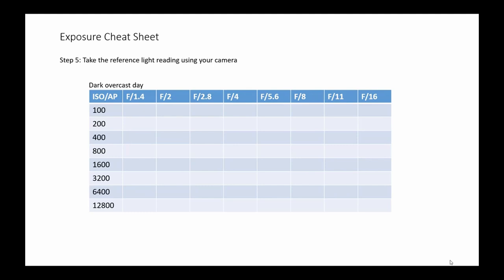Next, you take a reference light meter reading using your camera. Let's say you get a reading of ISO 400 at 1/125th of a second at f8. Now you need to mark down the shutter speed in the correct row and column - we are at ISO 400 and at f8, so the shutter speed goes right there, 1/125th of a second.